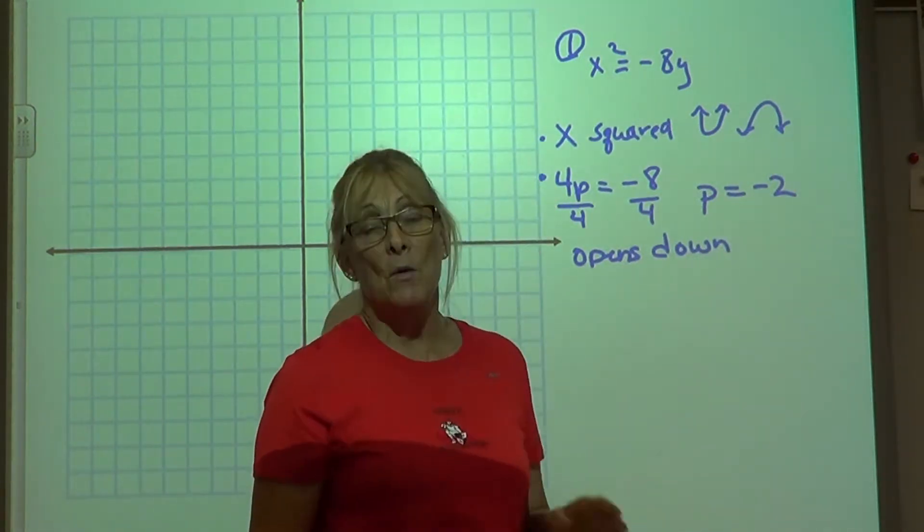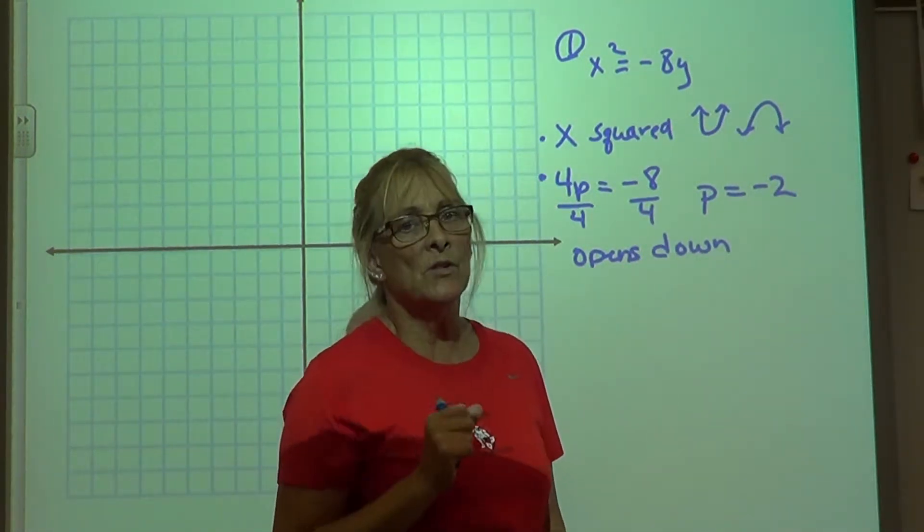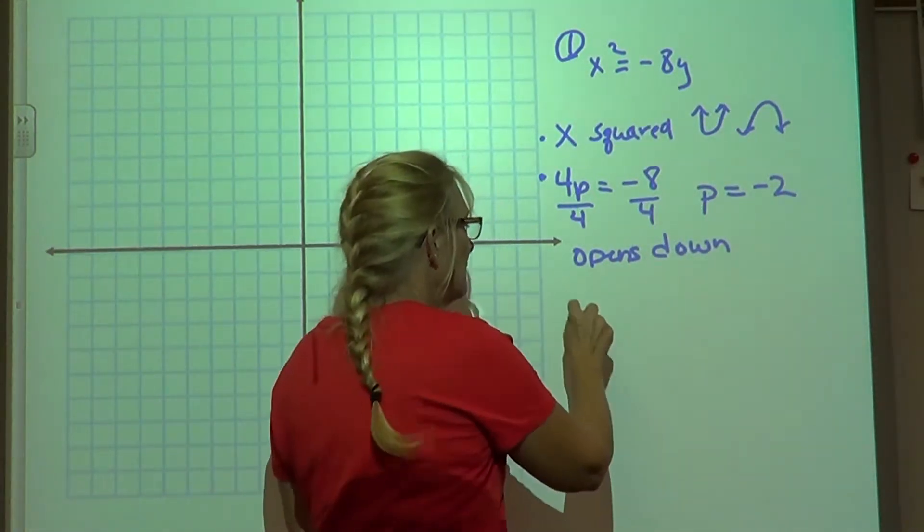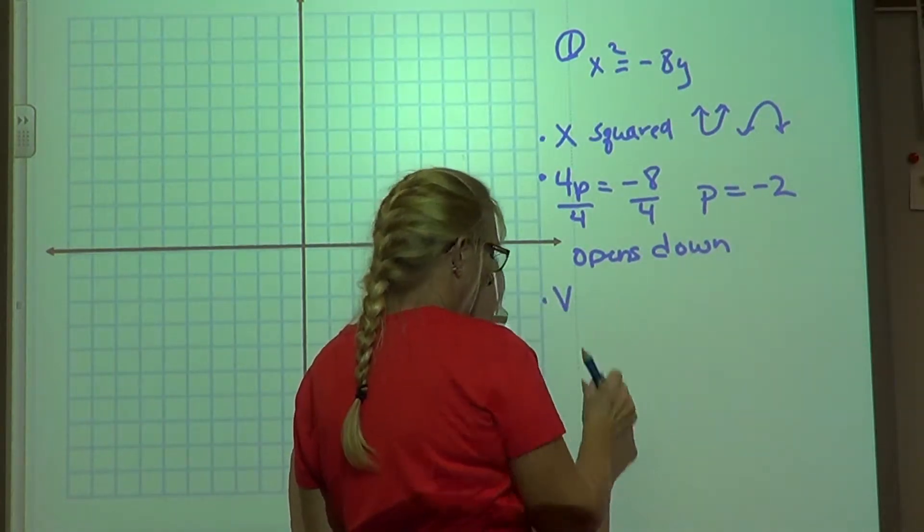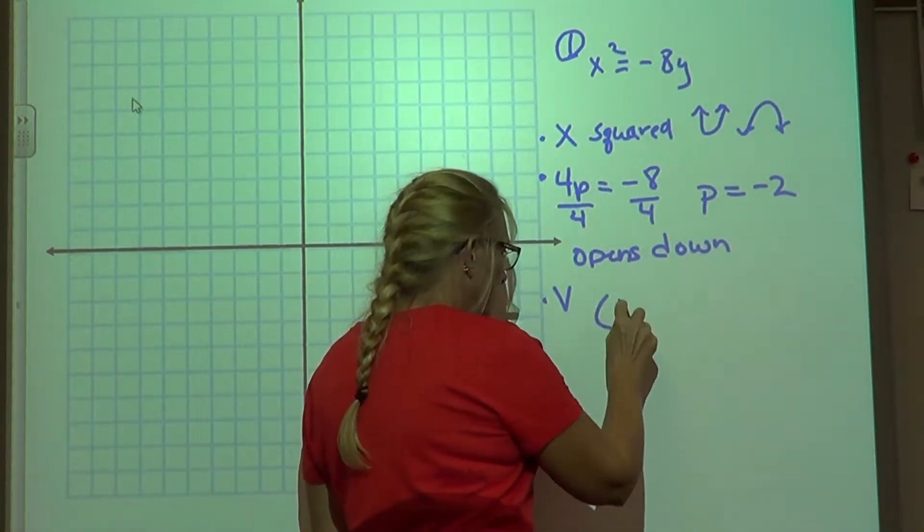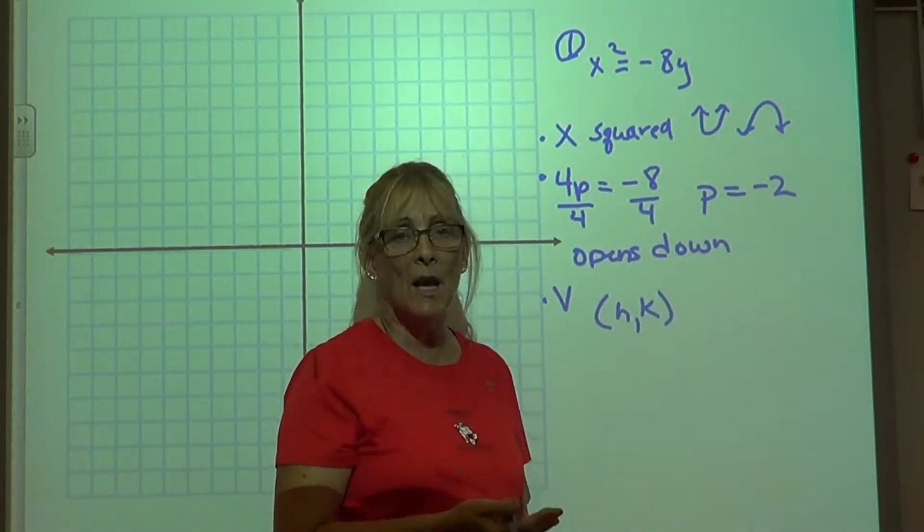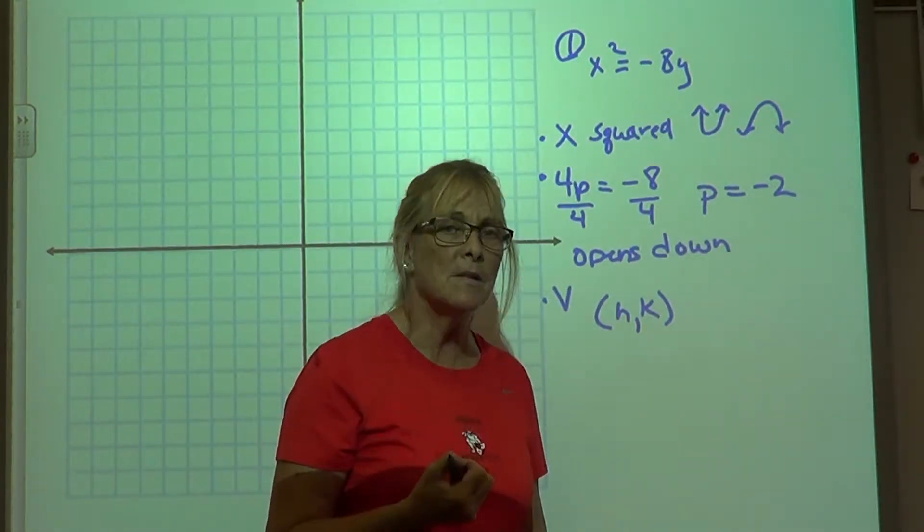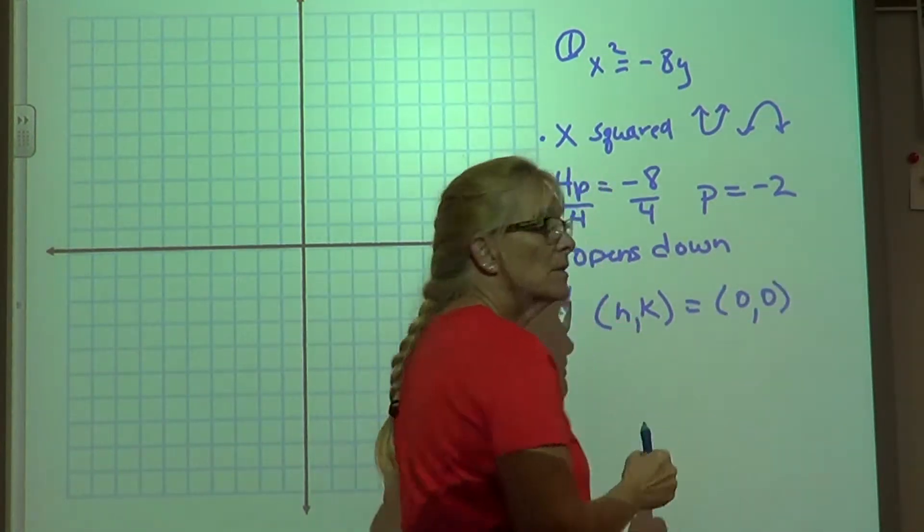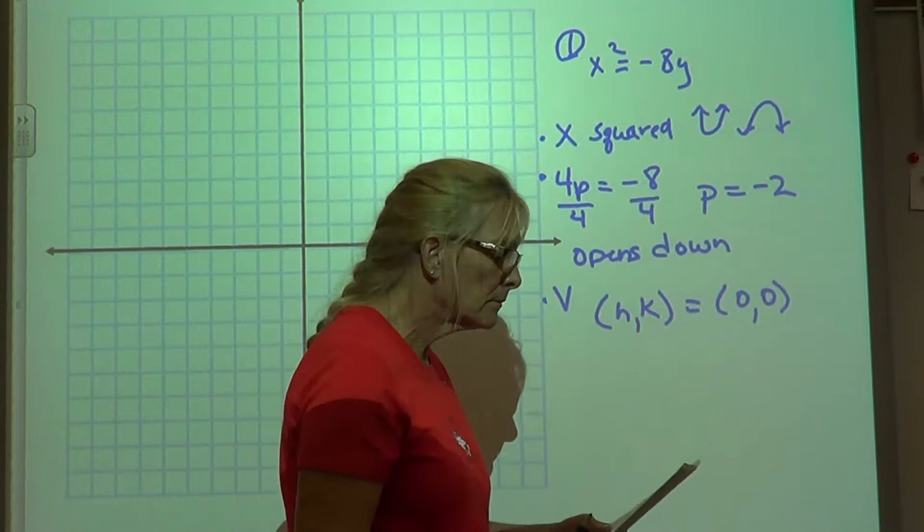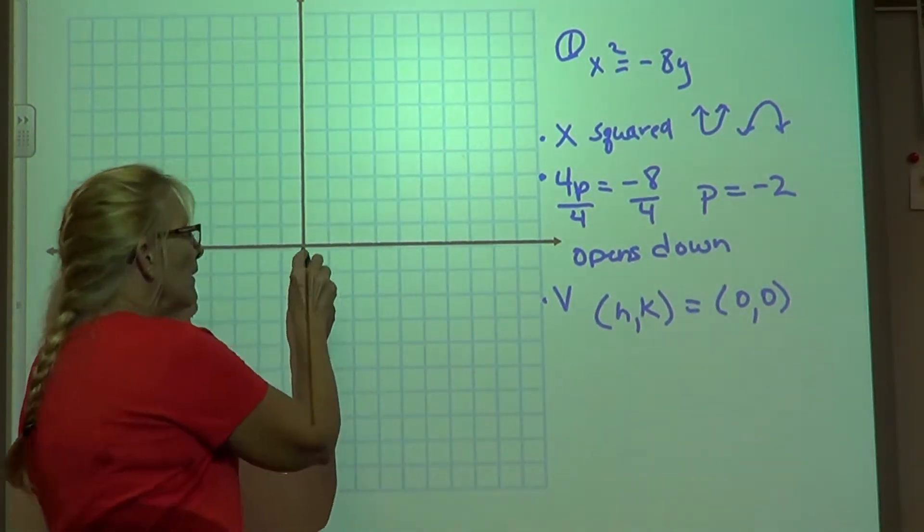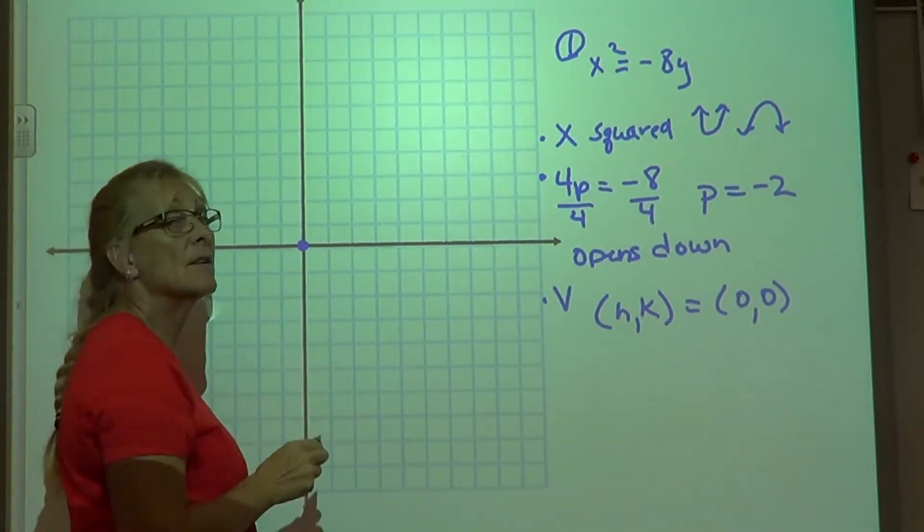Now we look at the focus and directrix. They are p units away from the vertex. Since p is 2, I find my vertex. The vertex h, k in this equation doesn't appear to exist, but they are 0, 0. Because zeros would hold the place for h and k. Now we start to graph. So I put my vertex on the graph at 0, 0.